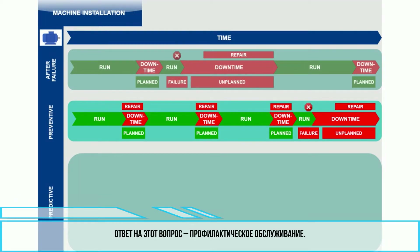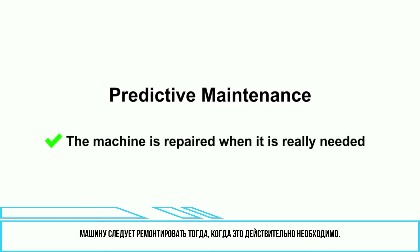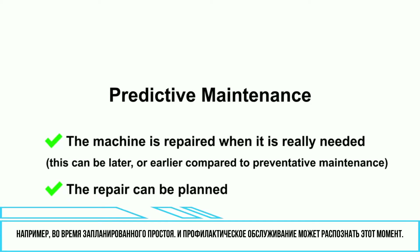So what is the best repair frequency for your machines? The answer to this question is predictive maintenance. The machine should be repaired when it is really needed. The right moment is when failure is near — or in other words, when the fault starts affecting the machine, but it is still safe to keep the machine running until the time for repair suits the company best, for example during a planned shutdown. And predictive maintenance can recognise this moment.